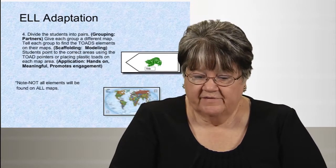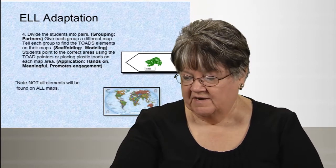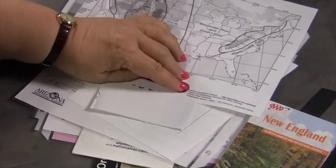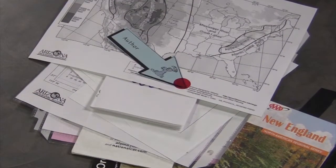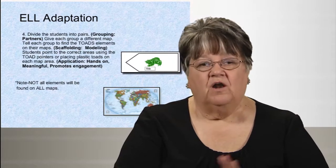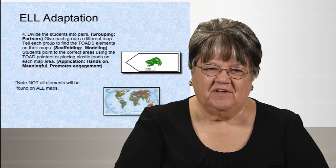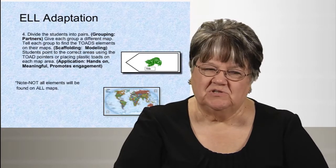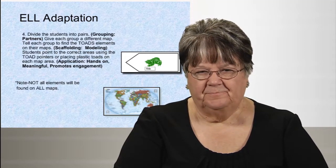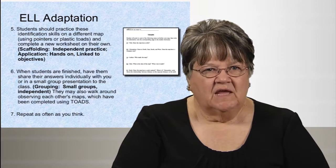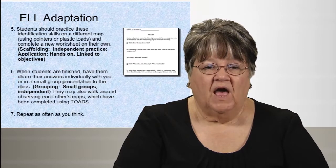Divide students into pairs, give them a map, and have them identify the TOADS elements — for example, pointing to the author and the title on the map. Reaffirm that not all elements are found on all maps; it's hard for students to believe that once they've learned something, they won't always be able to find it. With younger kids, you can use learning centers — put a map out each day and have them come by and TOADS it.